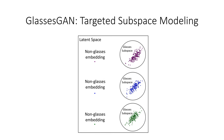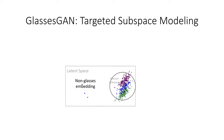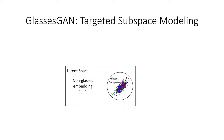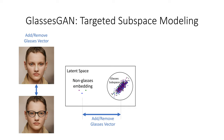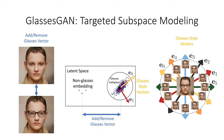Next, our targeted subspace modeling procedure leverages this sampling. We begin by subtracting out identity from the latent samplings to leave behind the embedding scatter found near each identity centroid, which we call the glasses subspace. We can then easily compute a generalizable vector for adding and removing glasses by finding the average distance between the non-glasses embeddings and the glasses embeddings. Additionally, we apply principal component analysis to the samples in the glasses subspace to model the six orthogonal directions of greatest variation. These are our new edit vectors that can edit and modify glasses on any image.